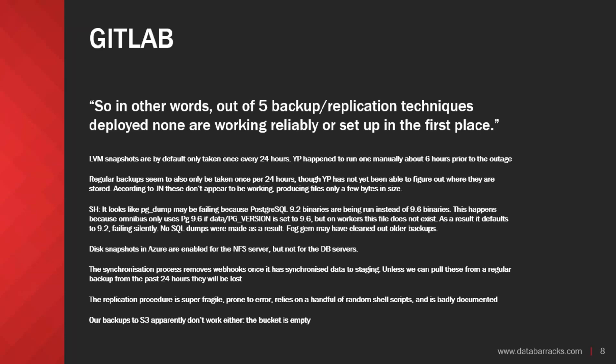They had issues with LVM snapshots, regular backups taken once per 24 hours with some manual ones more frequent, Postgres dumps that weren't working correctly, snapshots in Azure for certain servers and not others, synchronization problems, shell scripts that were badly documented — and when users were looking for where those backups were, they were empty. Thankfully they did manage to find the data on a staging server. The one thing GitLab did terrifically was publish exactly what they were going through. There were 5,000 people watching them live stream their recovery.